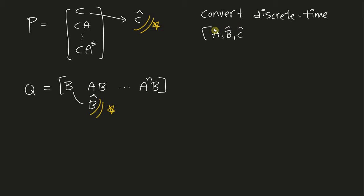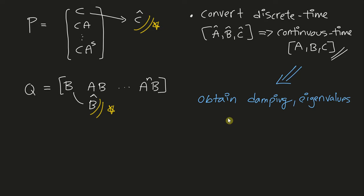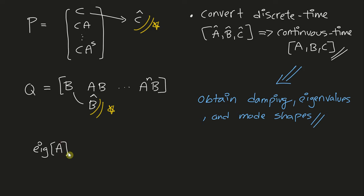The next thing I'm going to do is convert my discrete-time system to a continuous-time system. We had the discrete A, B, C matrices — you can convert those to continuous time. From these continuous A, B, C matrices, the next thing we can do is obtain damping, eigenvalues, and mode shapes. In the previous lectures we've gone into the details of how to get mode shapes and eigenvalues from these matrices — but here's a hint: if I compute eig(A), I get the natural frequencies ωᵢ and so forth.